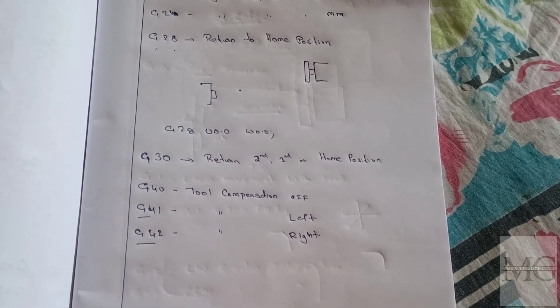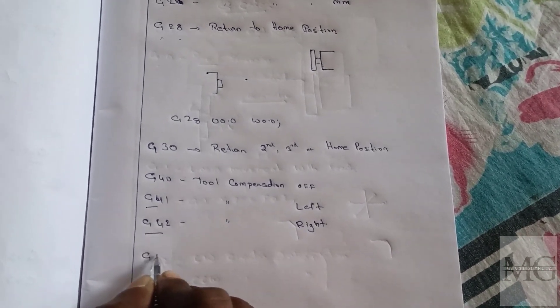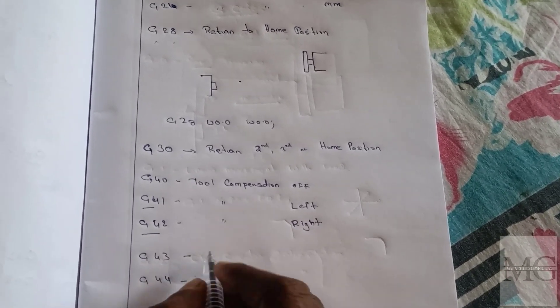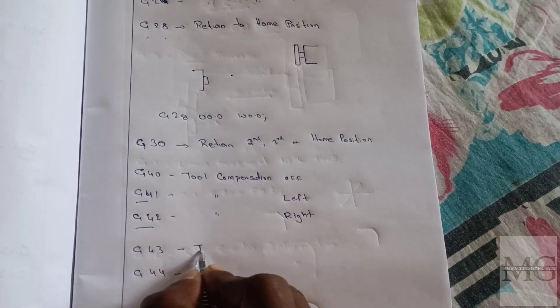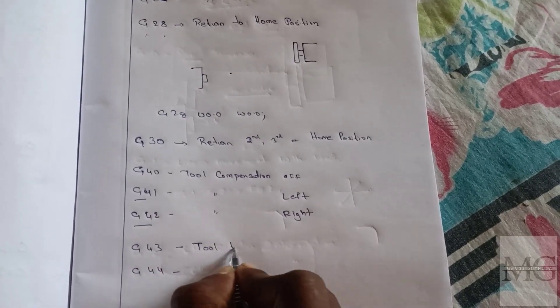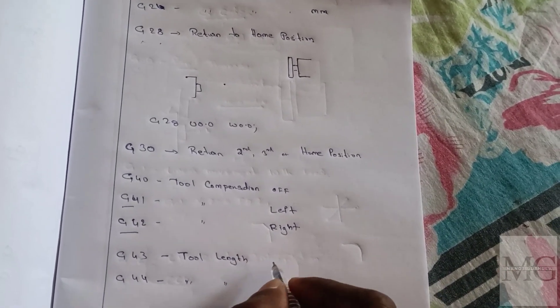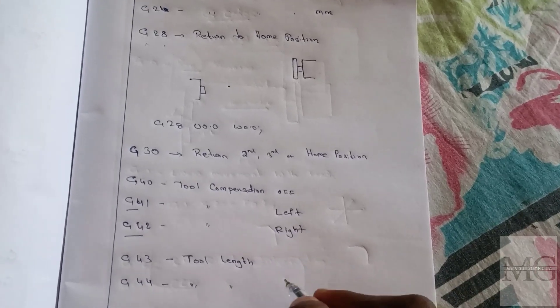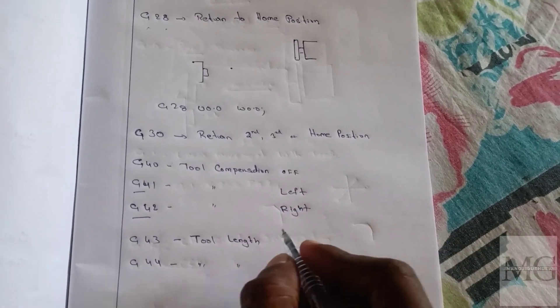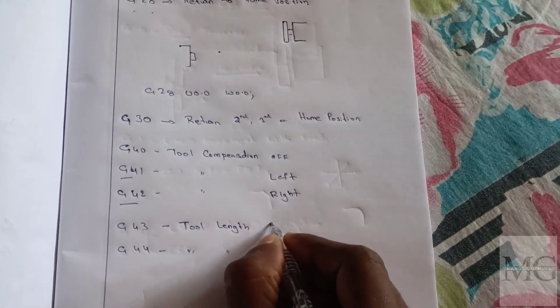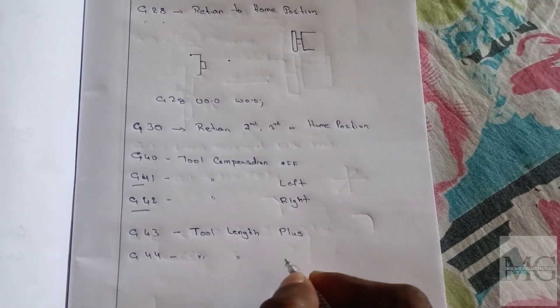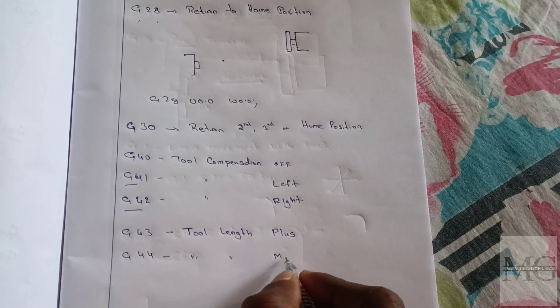The next codes are G43 and G44, which relate to tool length compensation. We will use these codes for milling. We will enter the tool height offset using G43 and G44 codes.